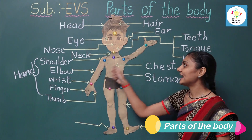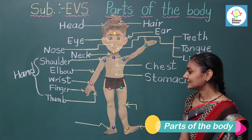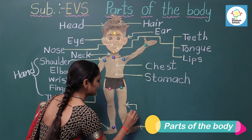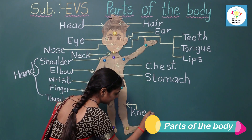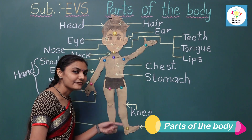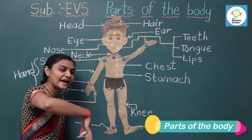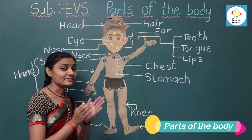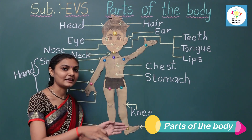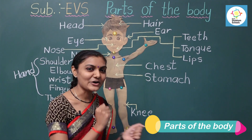The next one is this part — this is our knee — K-N-E-E. With the help of knee, we can bend our leg. So we can dance, we can run, we can walk. With the help of the knee, we can bend our leg, and by this we can dance, walk and run.